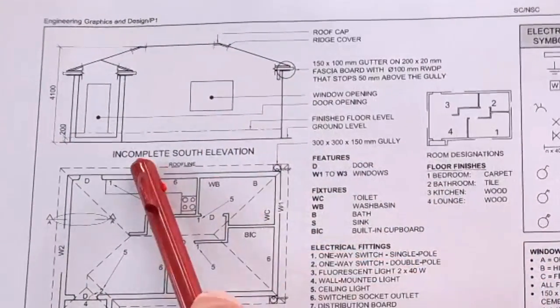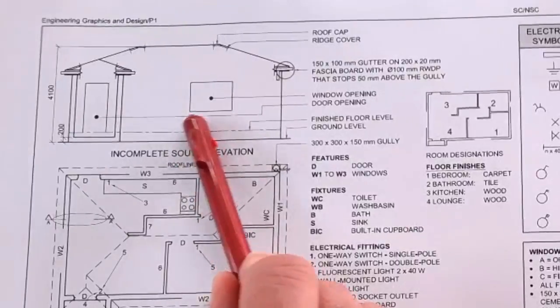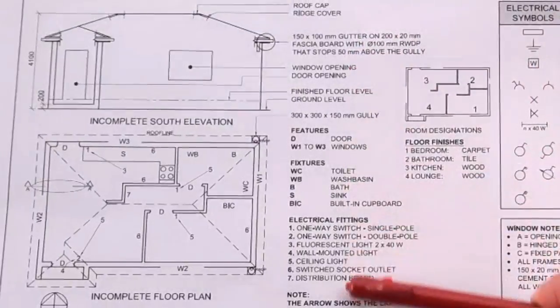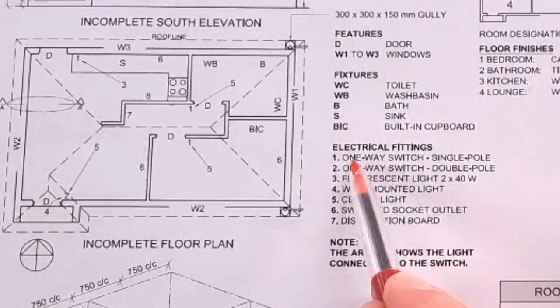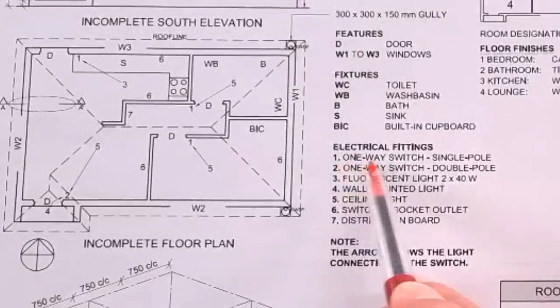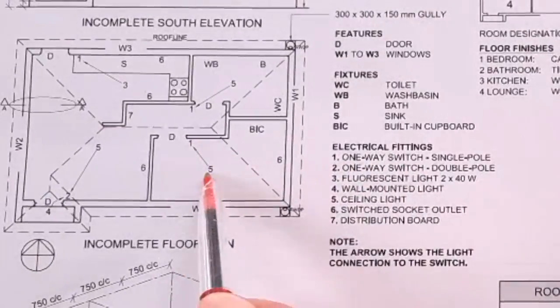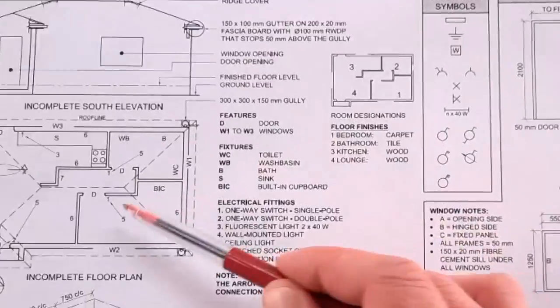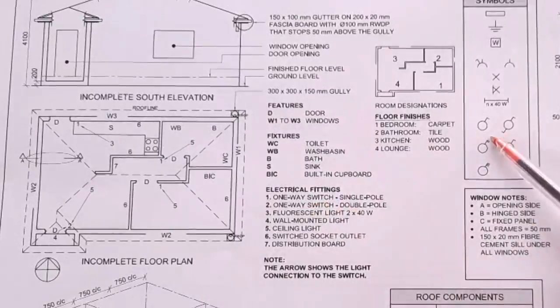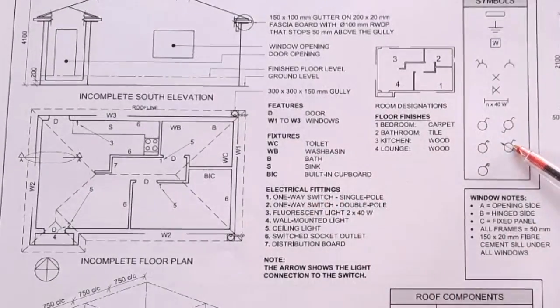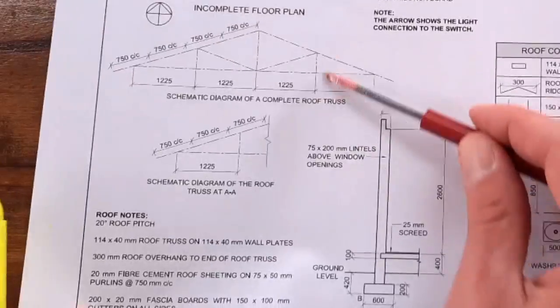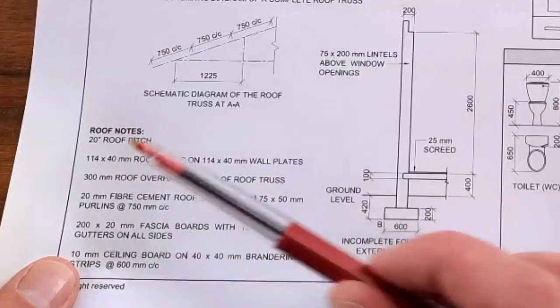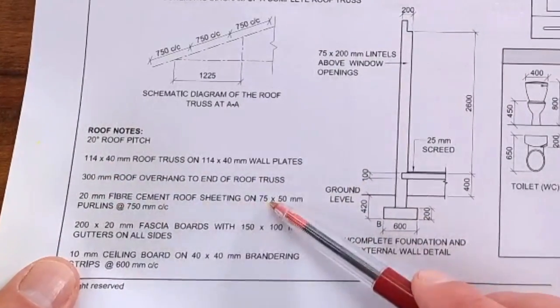They show you the elevation, the floor plan, and electrical diagrams. Number one is a one-way switch, number five ceiling light. You'll actually see the symbols you're going to use to complete this electrical diagram. You've got your roof details at the bottom with very clear dimensions. Remember this is a scale drawing so you have to use the dimensions given.